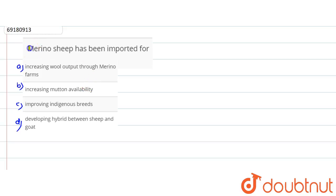In this question, I have been asked that Merino sheep has been imported for what purpose. So, this is an exotic breed of sheep. And this Merino sheep is known for the good quality wool which it produces.